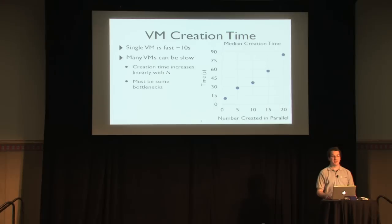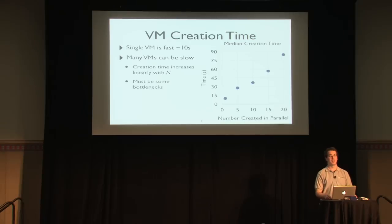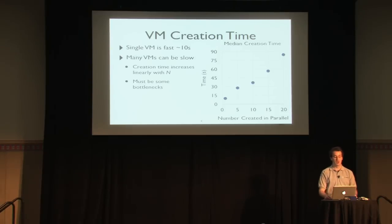The problem is that this limits your ability to scale. If you want to respond to a big peak in load it will take a long time, or you have to increase granularity which can mean poor utilization. The creation time increases roughly linearly with the number of VMs we're creating in parallel — clearly there are some bottlenecks. One positive note: this graph looks worse without Quantum, which shifted the curve up by about 10 seconds.